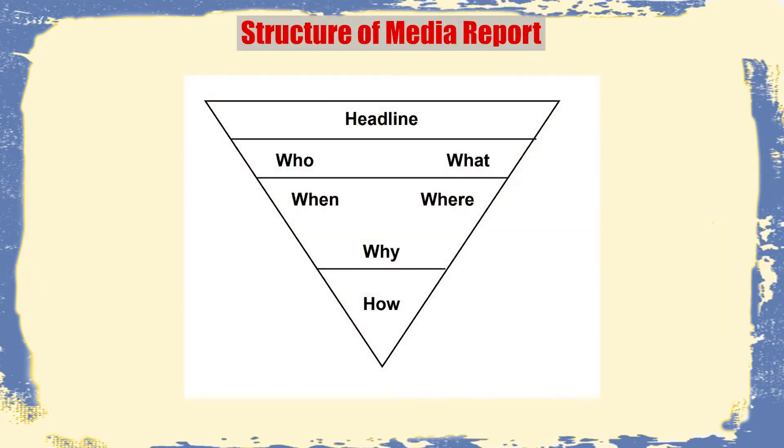Before going to the types of reporting, let me explain the structure of a media report. If I compare a media report with a movie — a movie starts in a storytelling method and at the end we see the climax. But in a newspaper report, it is just the opposite. The concept is the inverted pyramid — we put the main news or main content of the entire news story at the very beginning.